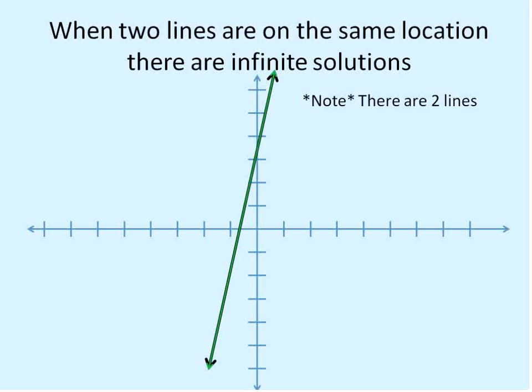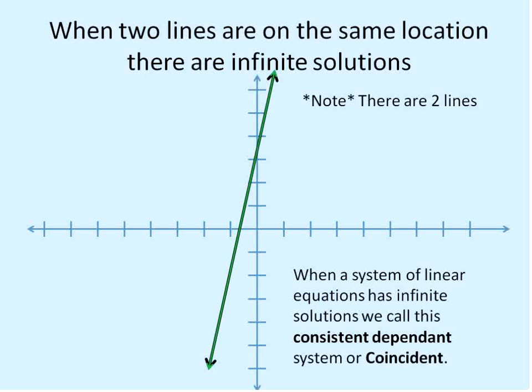Because they're the same location, there are an infinite number of solutions. Every single point along this line is also a point along the other line. So they have an infinite number of solutions. And we have a special name for these. They're called consistent because they have a solution. But they are dependent, a consistent dependent system. Or we can also call it a coincident.